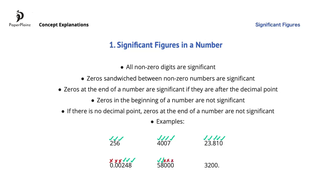There is a way to show that trailing zeros are significant, which you see in 3200. with a decimal point at the end, even though there are no numbers after the decimal point. So here, 3 and 2 are of course significant, and because of that decimal point, the two zeros are also significant. This notation is rarely used, so there is no need to worry about it too much.